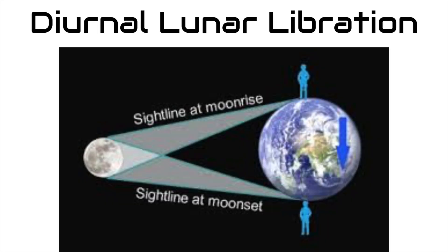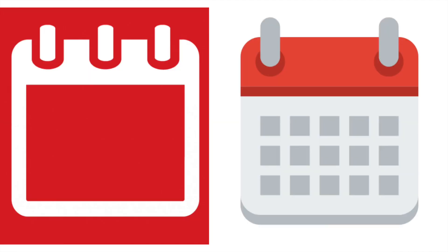Finally is diurnal lunar libration. This libration is different because it happens once a day rather than once a month. Why does it happen once a day?